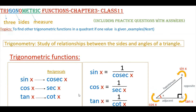Here are the trigonometric functions we have already learned in our previous class: sine x, cos x, tan x, cosecant x, secant x, and cot x. The reciprocals are: cosecant x for sine x, secant x for cos x, and cot x for tan x. So sine x = 1/cosec x, cos x = 1/sec x, and tan x = 1/cot x.